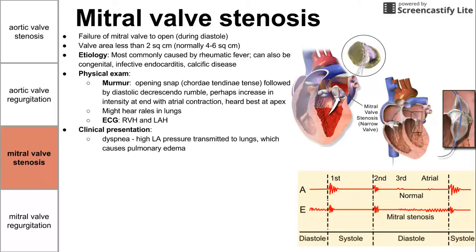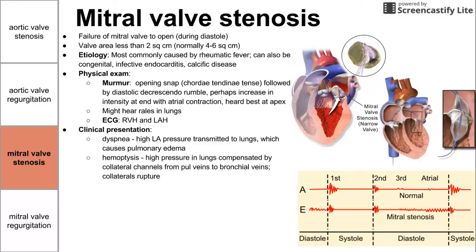In the clinic, patients come in short of breath. They have high left atrial pressure, which can be transmitted to the lungs, causing pulmonary edema. You might also have hemoptysis. If the pressure in the lungs gets really high, collateral channels can form from the pulmonary veins to the bronchial veins. If one of these unstable collateral channels ruptures, we might end up with blood in the lungs — hemoptysis, coughing up blood.